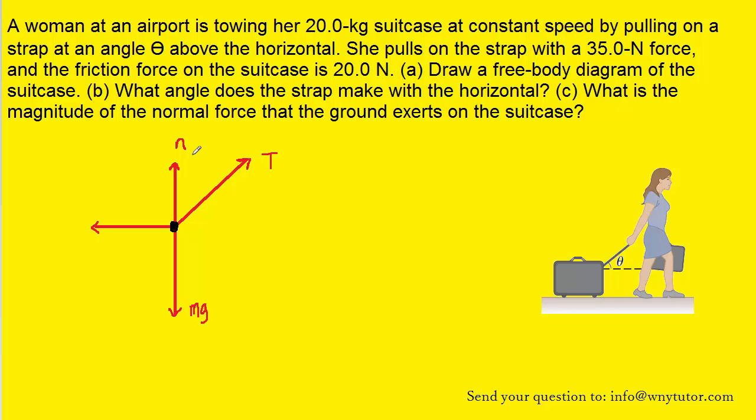And then the question mentions that there is a frictional force, and since we can assume that she's moving to the right, the frictional force will be pointing to the left. It's trying to oppose the motion of the suitcase.